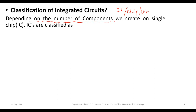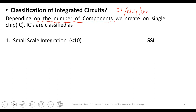Integrated circuits are classified based on the number of components accommodated on a given substrate. The first type is Small Scale Integration, or SSI. When the number of components in a circuit is less than 10, we call it small scale integration. The ICs we use in laboratory experiments — like multiplexers — fall into this category.